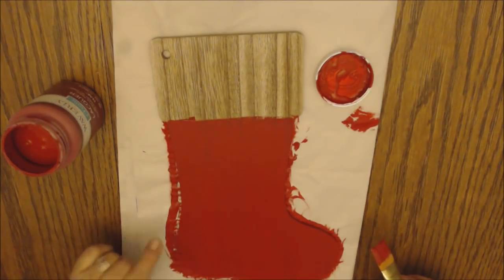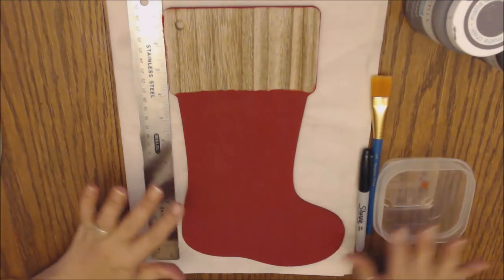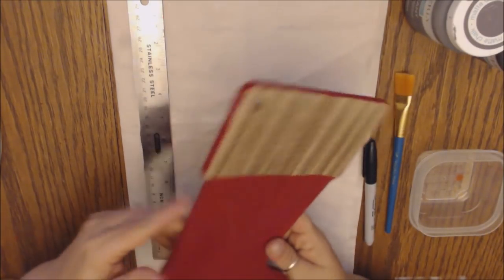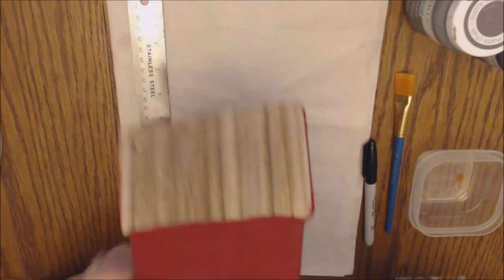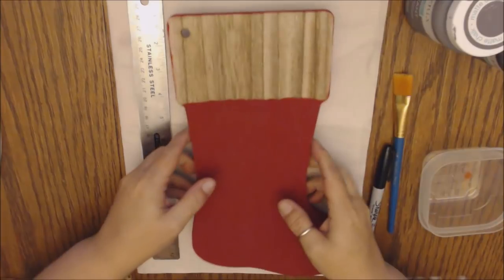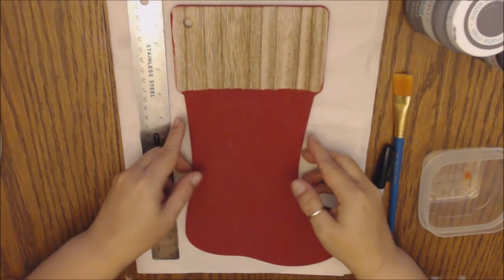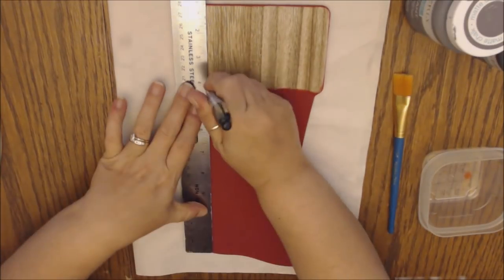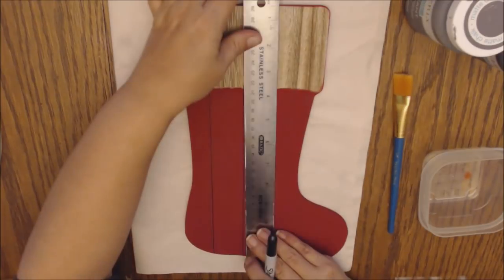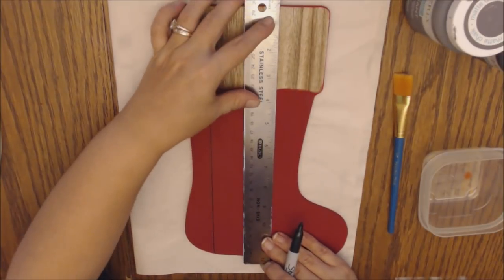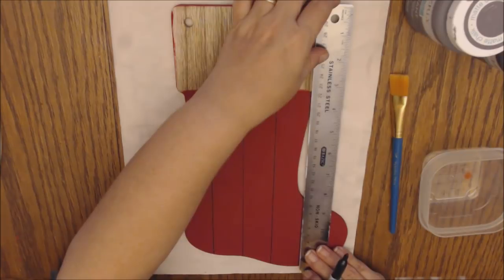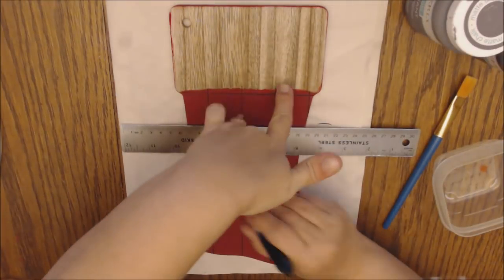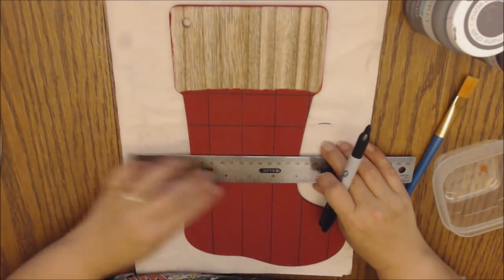And once it's dry, we're going to come back in and we're going to make the lines to our buffalo check. And I just did my lines the width of the ruler. So those are what's going to make our square. So each of my squares are going to be basically the width of my ruler. And I'm going to do that vertically as well as horizontally. I'm just going to do that all the way across and then all the way down the stocking.